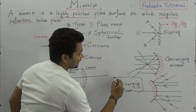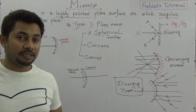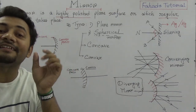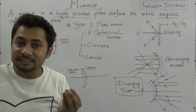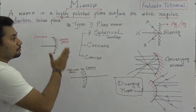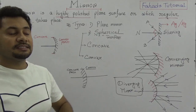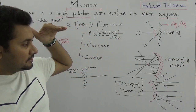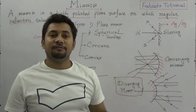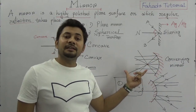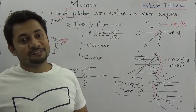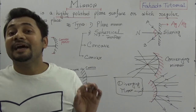So the convex mirror is known as a diverging mirror and the concave mirror is known as the converging mirror — they do the exact opposite. In a spherical mirror, if the incident rays are parallel, after reflections they are subject to this convergence or divergence. As they are parts of a sphere, the concave mirror acts as a converging mirror and the convex mirror acts as a diverging mirror.